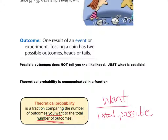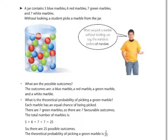For example, say we were rolling a 10-sided die numbered from 1 to 10, and we want all even numbers. As a fraction, there are 10 possible numbers, and 5 of them are even: 2, 4, 6, 8, and 10. So our theoretical probability of rolling an even number on a 10-sided die would be 5 out of 10. What we want — even — goes on top. What's possible — 10 total — goes on the bottom.